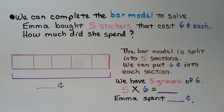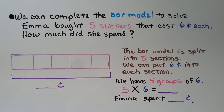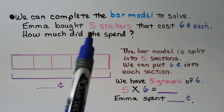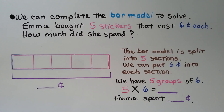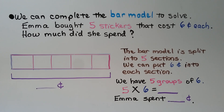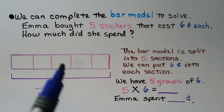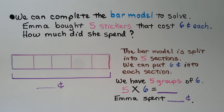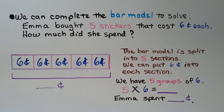We can complete the bar model to solve. Emma bought 5 stickers that cost 6 cents each. How much did she spend? We look at the bar model — it has 5 boxes, which represents the 5 stickers, the 5 groups. We put 6 cents into each of the 5 sections, so we have 5 groups of 6. 5 times 6 is equal to 30, so Emma spent 30 cents.